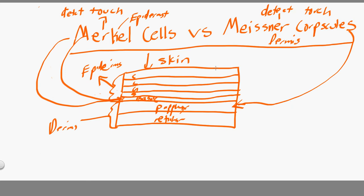Now, they're also kind of detecting a different type of touch. If we want to go into some detail, the Merkel cells are detecting sort of a light touch. And the Meissner corpuscles are also detecting touch, but more of a vibration type of touch. But the concept is the same, and this is the big picture between those two.